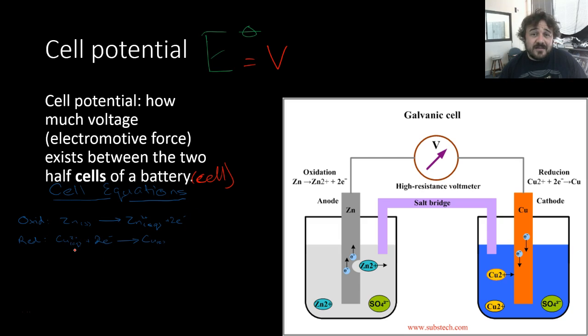Now, the way we would actually write this, if we were trying to describe a cell, summarizing a cell really quickly, is we just go zinc solid, line, zinc 2 plus aqueous, double line, copper or copper ion, line, copper element.